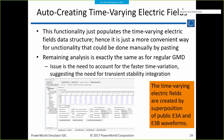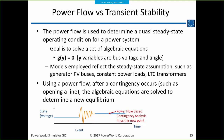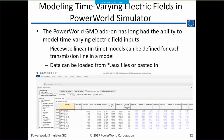This functionality just populates the time-varying electric fields data structure — it's a more convenient way to do what could be done manually by pasting. The remaining analysis is exactly the same as a regular GMD. PowerWorld lets you enter time data and say 'I want to analyze it at 60 seconds' and do snapshot analysis.